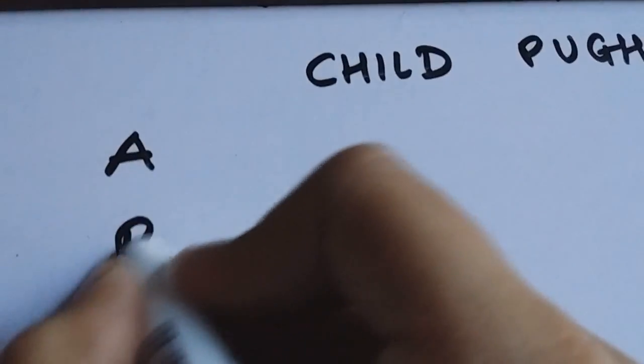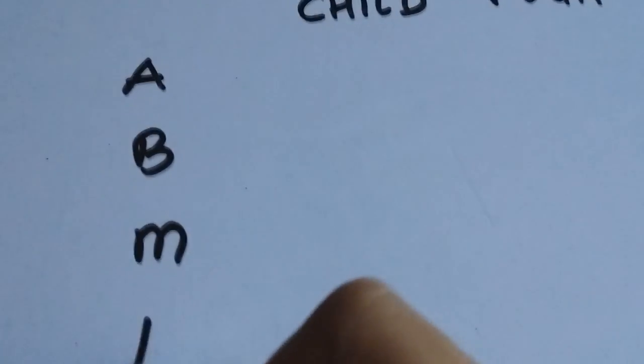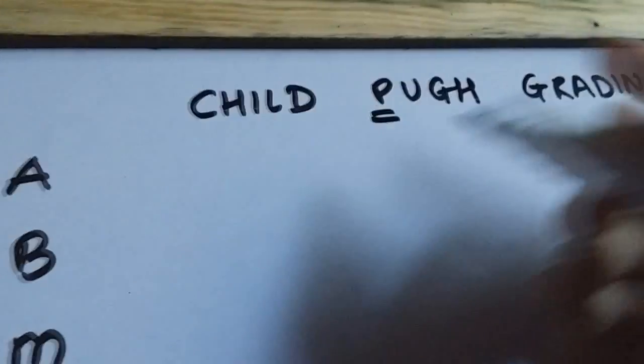There's a mnemonic for this, and it's ABMAN. And this was Child's grading, and Pugh added a P to it for prothrombin time. So P for Pugh and P for prothrombin time is easy to remember.